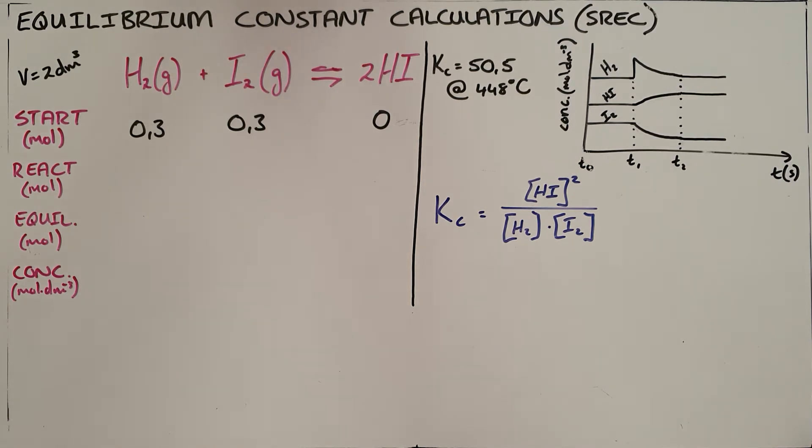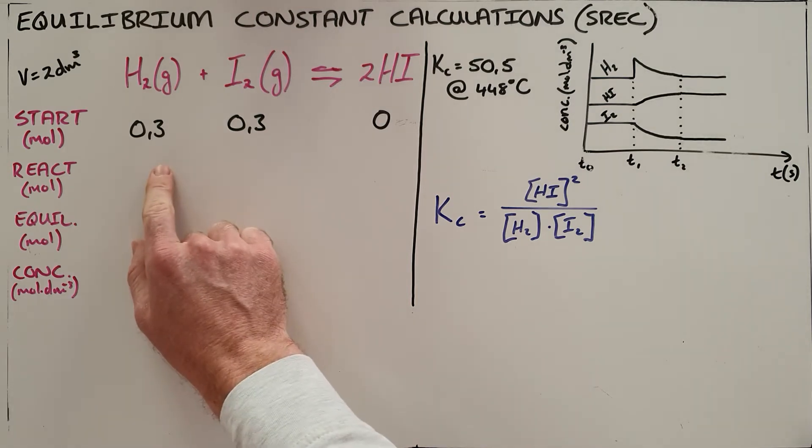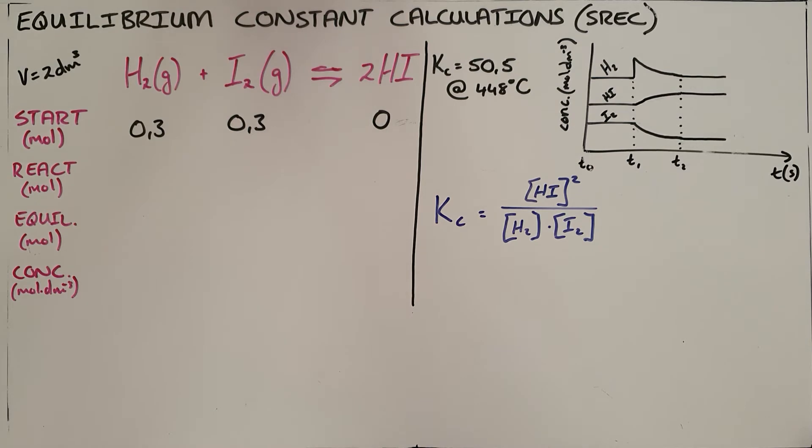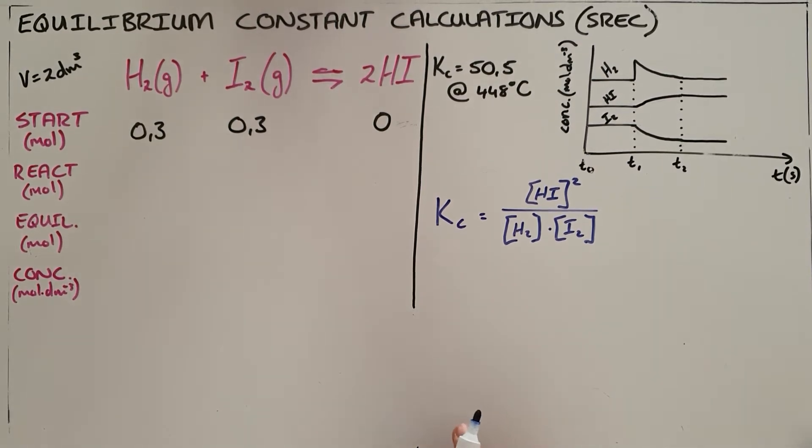We are asked to calculate the amounts of hydrogen, iodine, and hydrogen iodide at equilibrium. We can do this with the aid of a Schreck table.